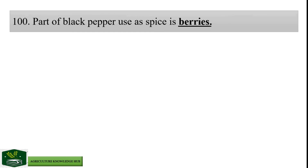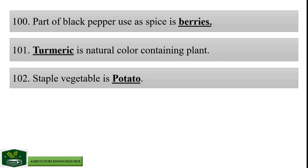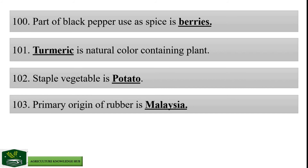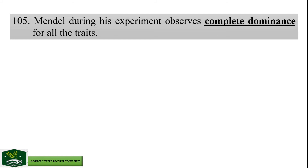Part of black pepper used as spice is berries. Turmeric is a natural color-containing plant. Staple vegetable is potato. Primary origin of rubber is Malaysia. Critical growth stage of soybean is flowering. Mendel during his experiments observed complete dominance for all the traits.